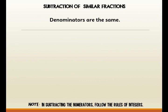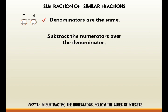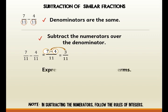Next is subtraction of similar fractions. Again, check if the denominators are the same. Example: 7 over 11 minus 4 over 11. We have the same denominators. Then, subtract the numerators over the denominator. So, 7 over 11 minus 4 over 11 can be written as 7 minus 4 all over 11, and that equals 3 over 11. Express the answer in lowest terms — 3 over 11 is already the lowest term.